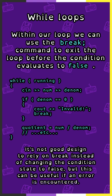Within our loop, we can use the break command to exit the loop before the condition evaluates to false. For instance, while running, we can get an input for numerator and denominator — if the denominator is equal to zero, then we break. It's not considered good design to rely on break instead of just changing the condition to false, but it can be useful if an error is encountered.